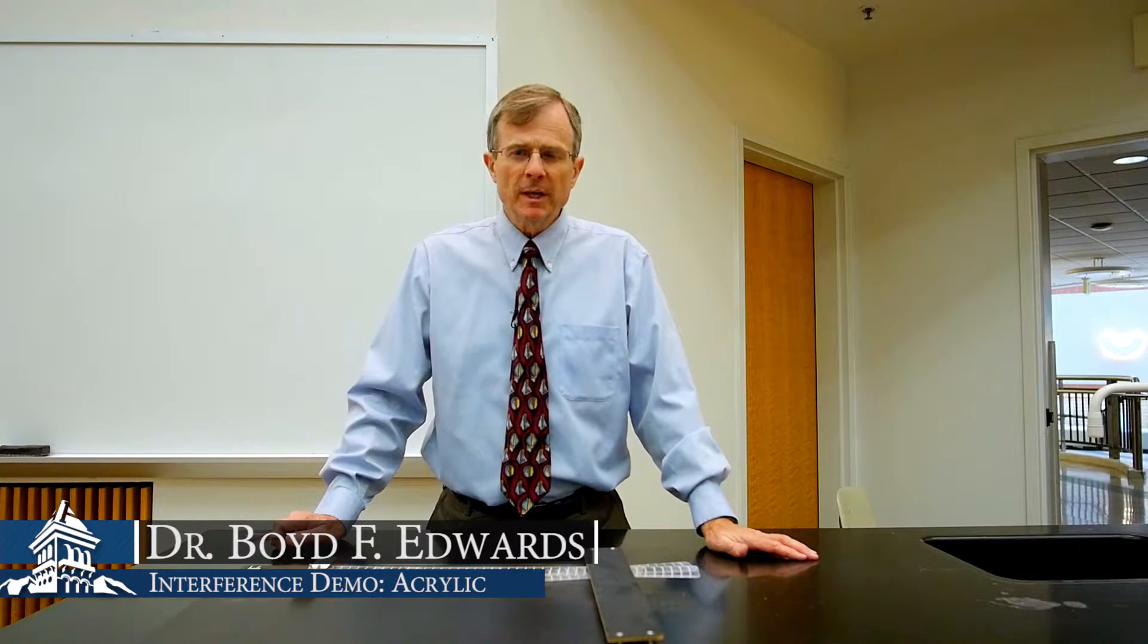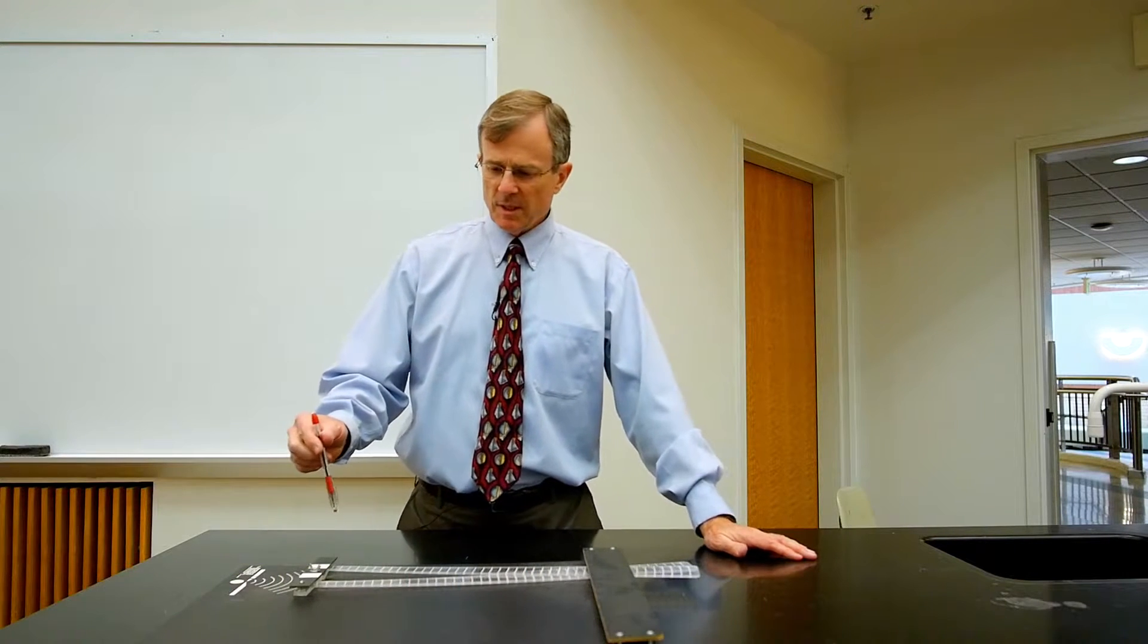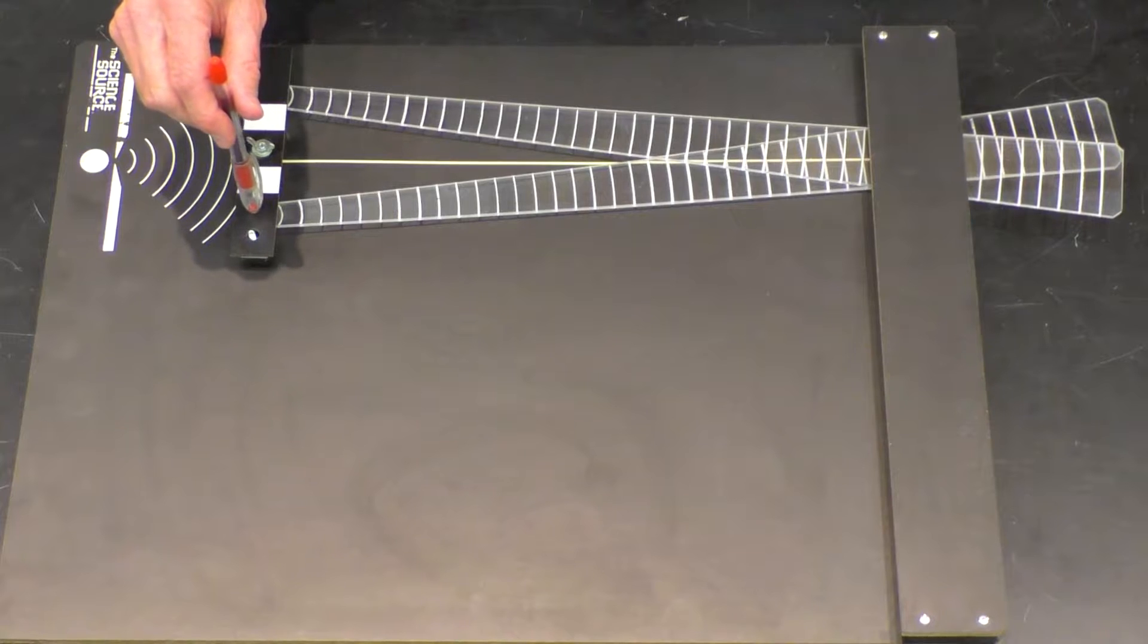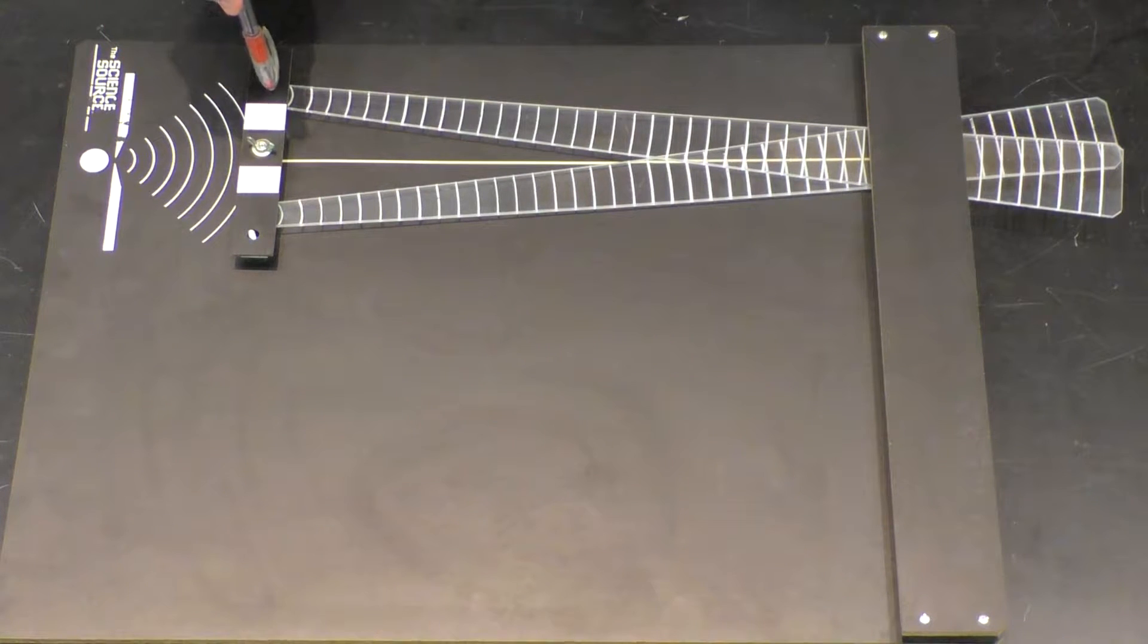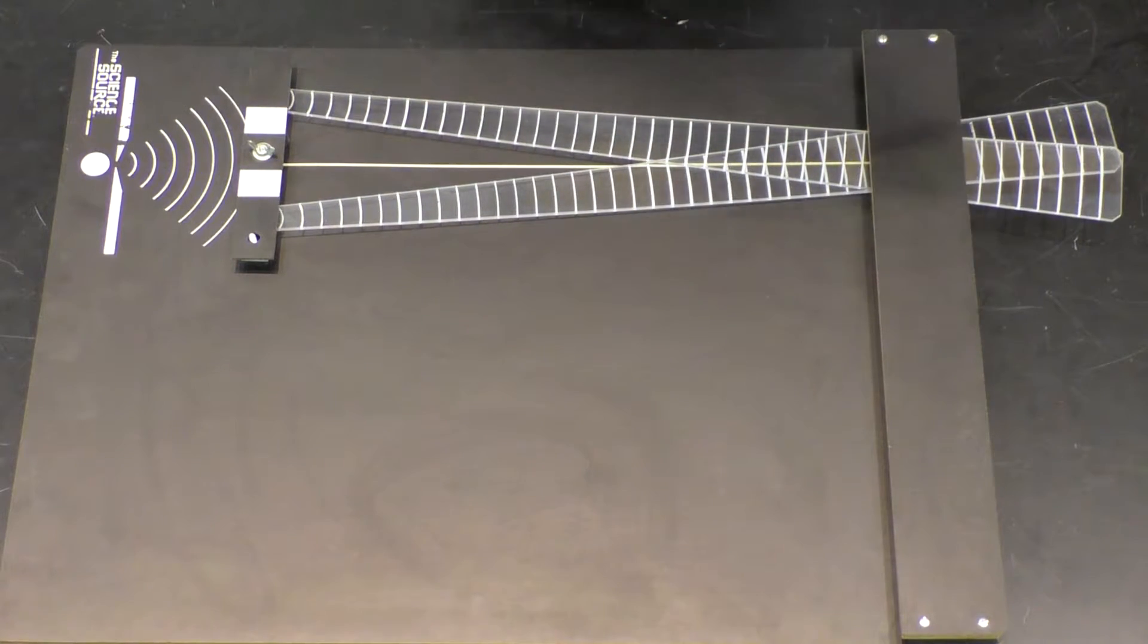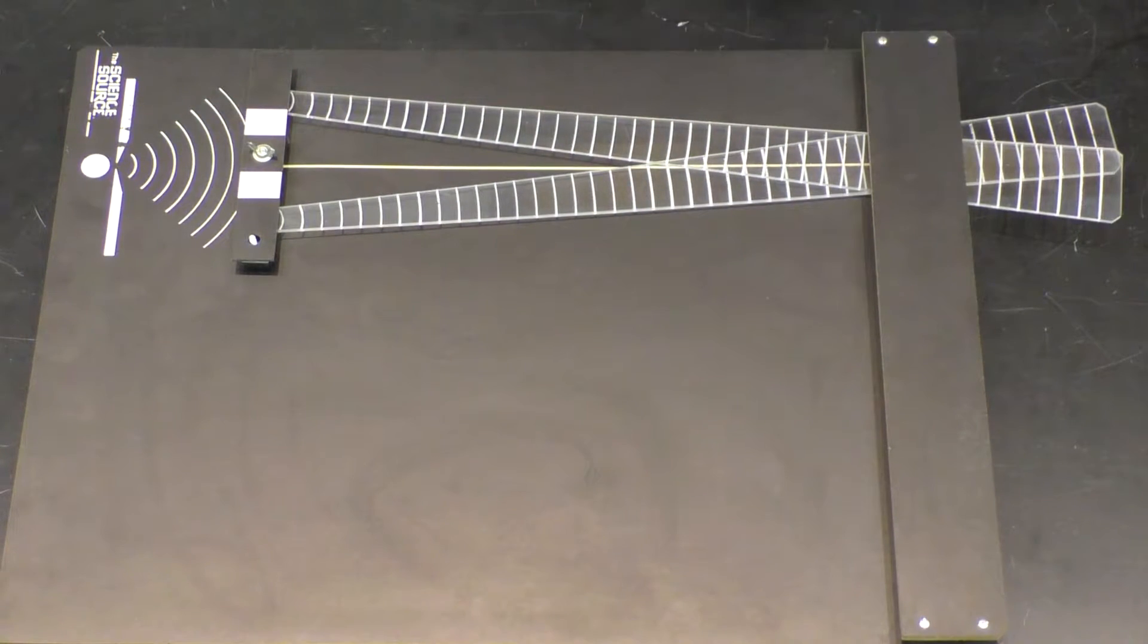This is a demonstration of interference of two different waves. What's illustrated here is we have two wave sources, one coming from this point here and one coming from this point here. I'll refer to this as the top wave and this is the bottom wave.